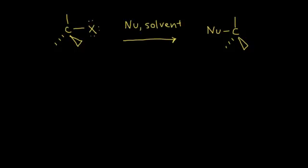An SN1 reaction. The S stands for substitution, and the N stands for nucleophilic. So this is a substitution of a halogen by a nucleophile. You can see that's what's happening in the general reaction: we have a halogen, and the nucleophile is substituting for the halogen. Let's look at the mechanism for an SN1 reaction.